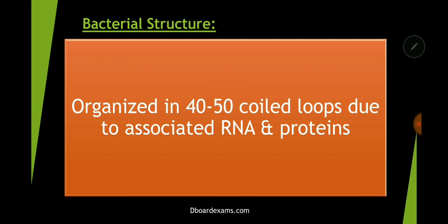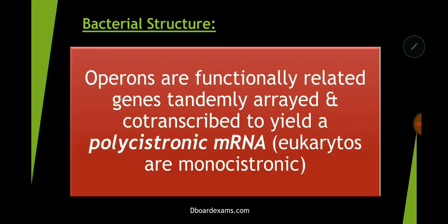This DNA is organized in 40 to 50 coiled loops, which are associated with RNA and proteins. This is very critical — it's associated with RNA and proteins. And bacteria have operons.